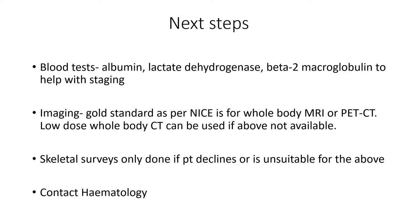So next steps on the ward round: blood tests — albumin, LDH, and beta-2 microglobulin — are all very useful because they help stage the patient's myeloma. You'll need to get some imaging. The NICE guidelines gold standard is whole body MRI or PET. If you don't have access to those, you can use a low dose whole body CT. Skeletal surveys used to be done very commonly but have fallen out of fashion. If the patient declines 3D imaging or is unsuitable for it, you can consider a skeletal survey. And you're going to contact haematology.